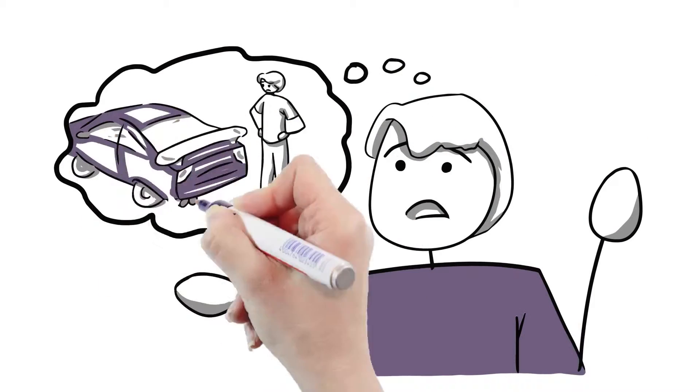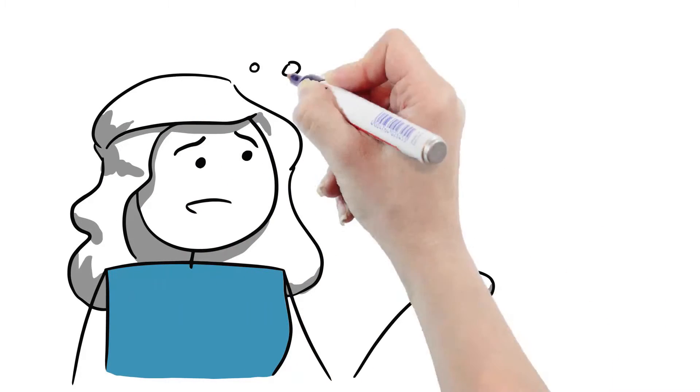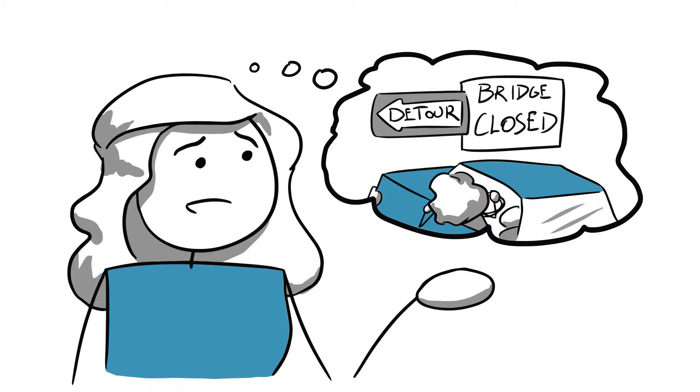Dave is upset that potholes are messing up the suspension on his car. And Barb is forced to take a detour every day to get her kids to and from school because the bridge near their house is closed because it's not safe.